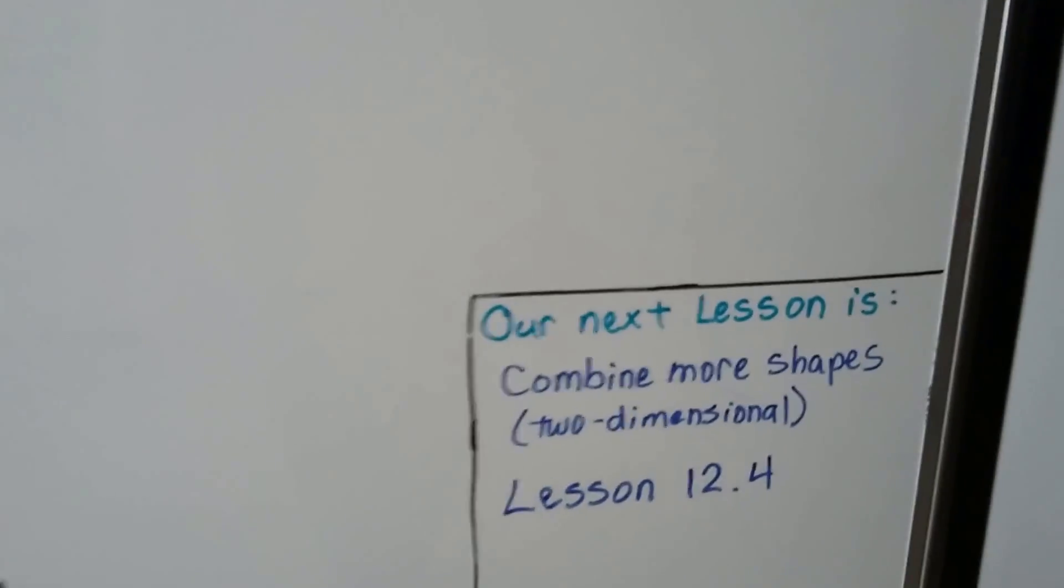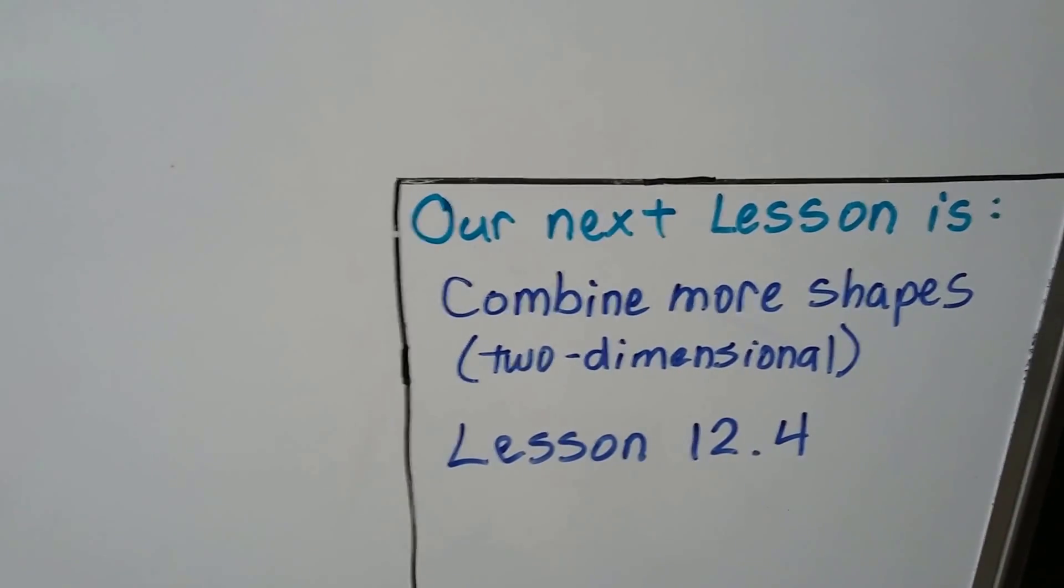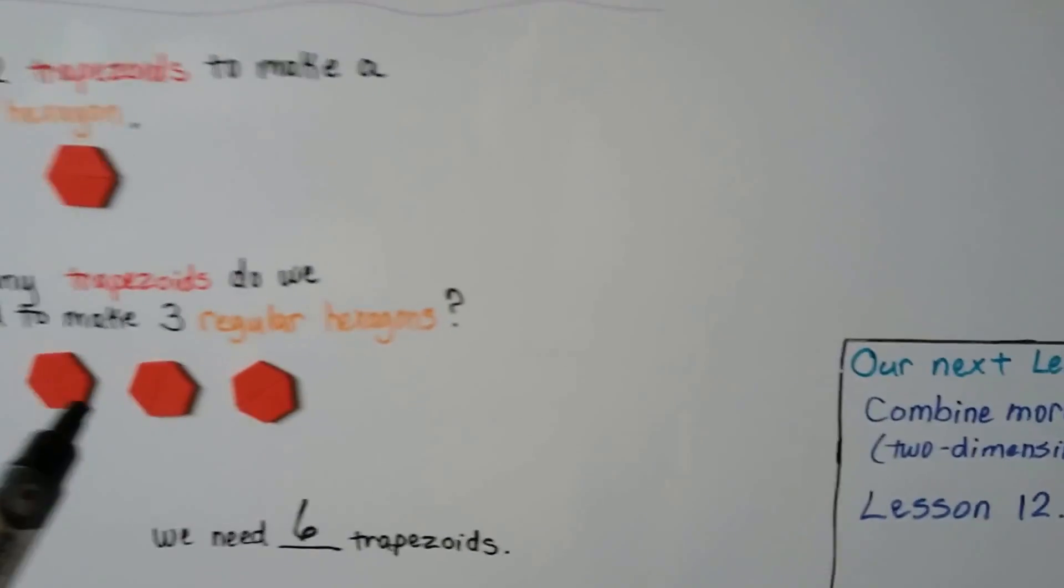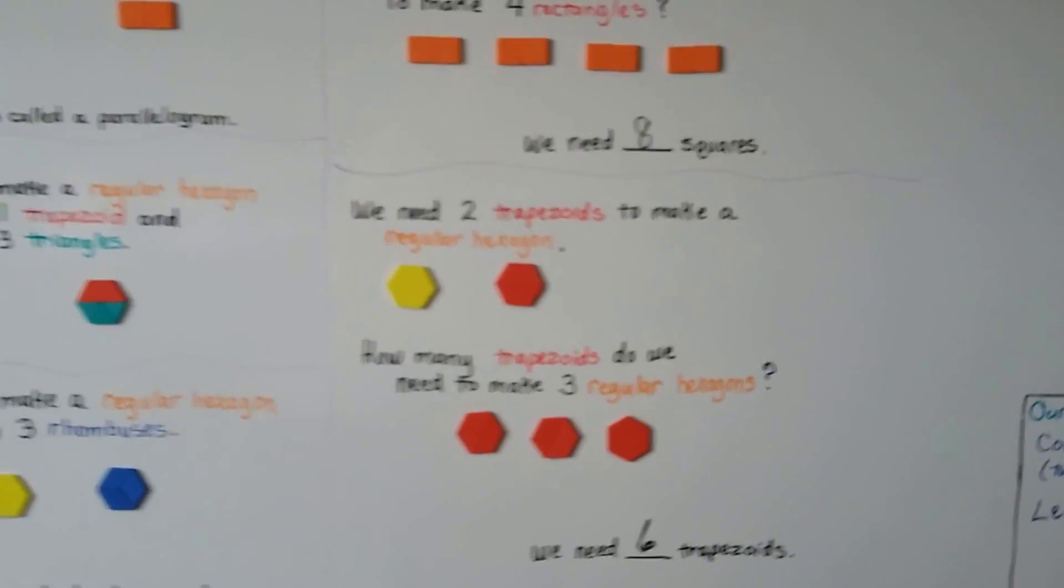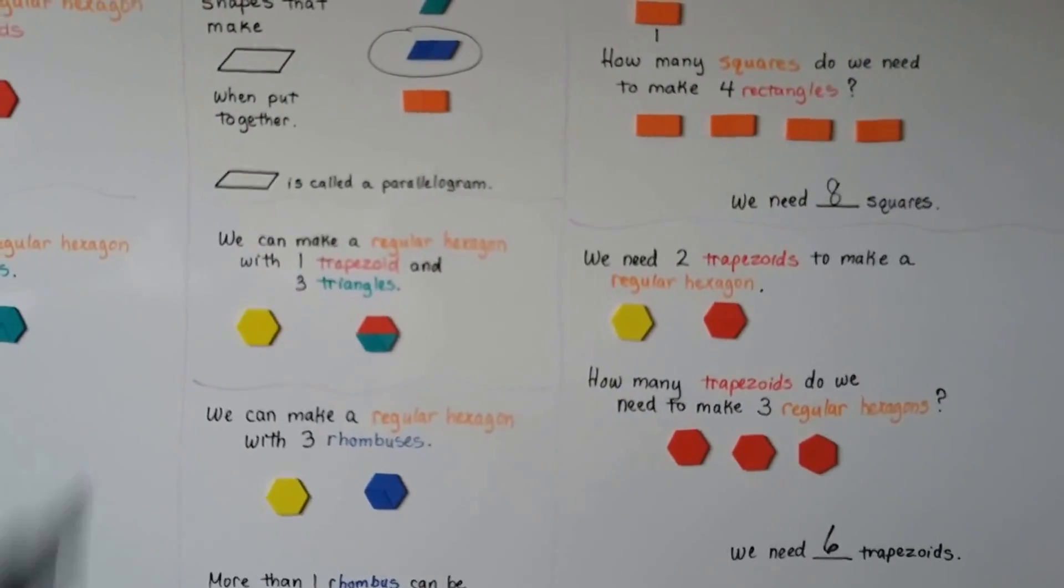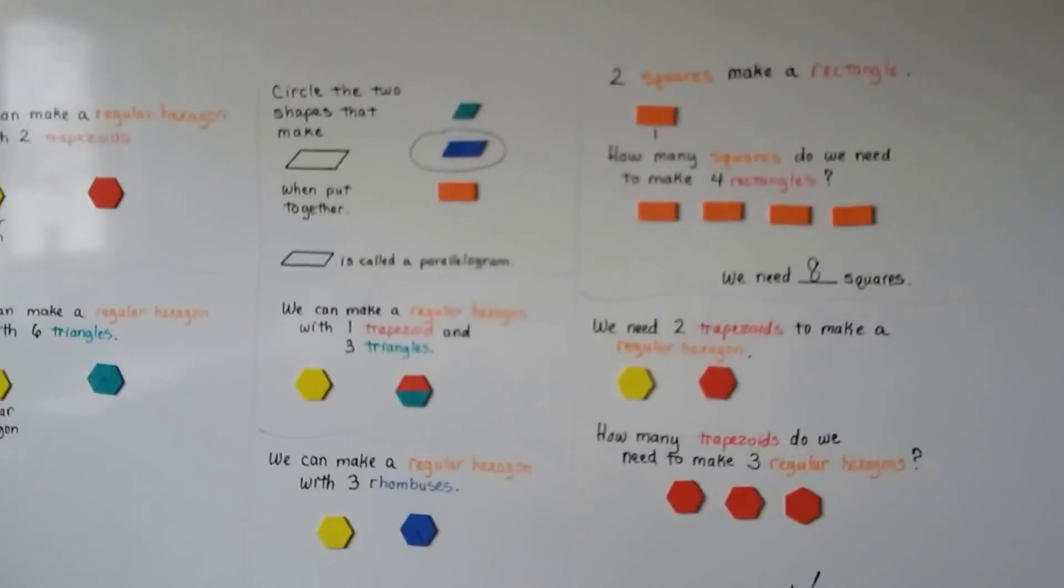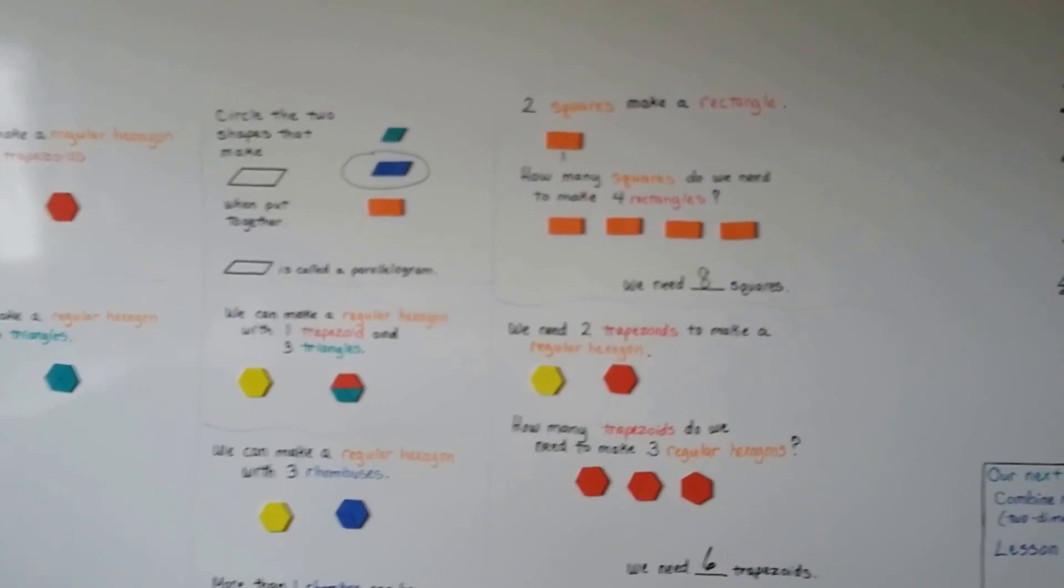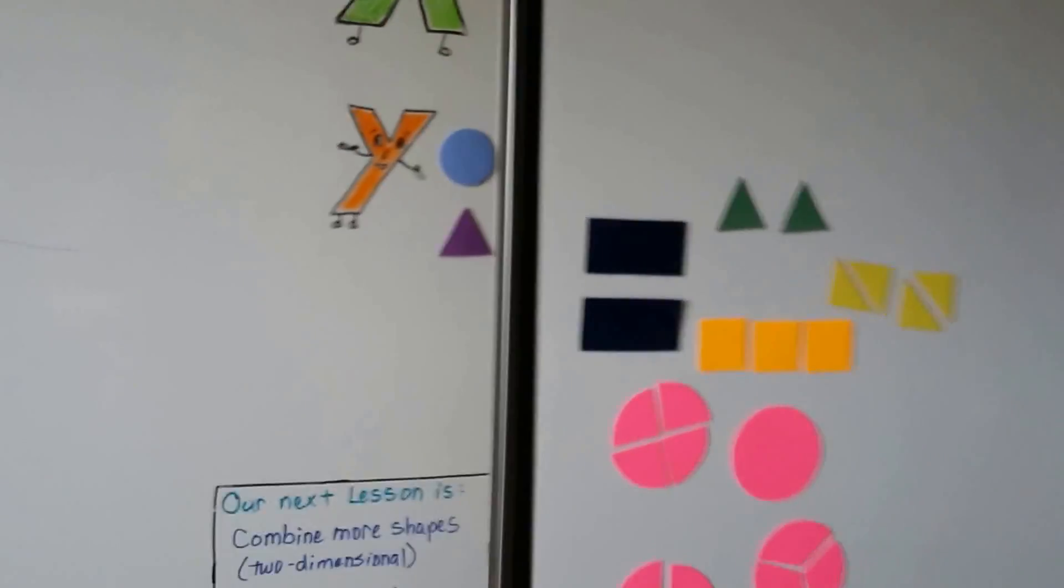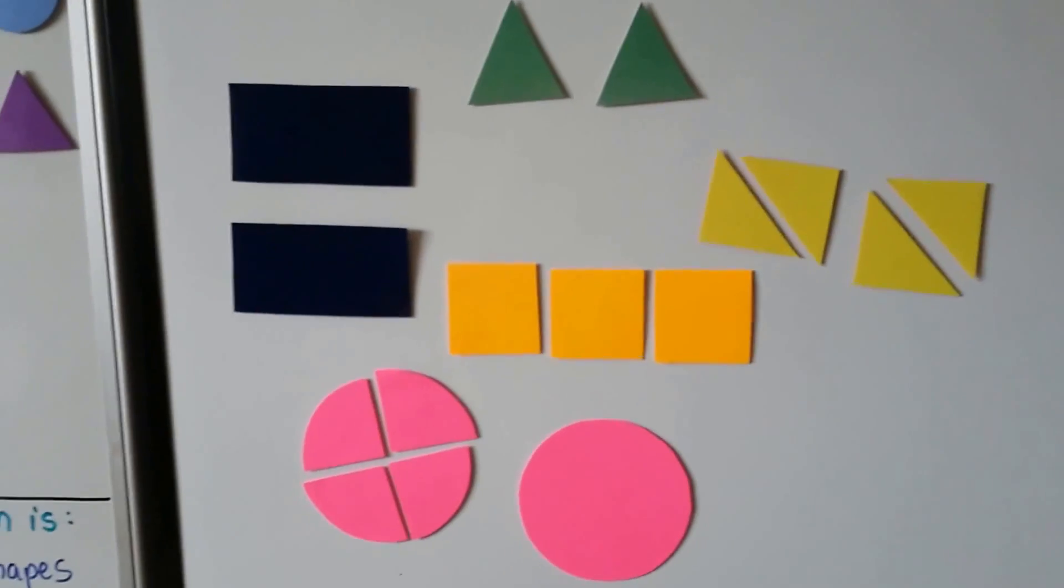In our next lesson, we're going to combine more shapes that are two-dimensional. That'll be lesson 12.4. And if you'd like to get some pattern shapes like this, you can order them online from Learning Resources. Mine are magnetic, so they stick to the dry erase board. You can get some made out of wood or made out of plastic. You could even make your own with paper and construction paper. I made some shapes over here out of construction paper and poster board.